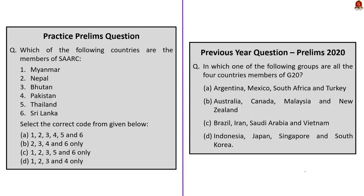The next question is about the members of SAARC. In UPSC, questions about members of international organizations are frequently asked — for example, membership of G20 was asked in the 2020 prelims. This question is framed around SAARC because 8th December 2022 marked the 38th SAARC Charter Day, making it relevant for the exam.